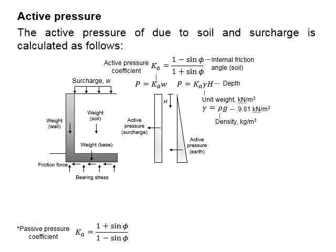The active pressure is normally caused by the surcharge and the soil material that the retaining wall retains. The active pressure caused by the surcharge is considered as the variable action Qk, and the active pressure caused by the soil material is considered as a permanent action Gk.